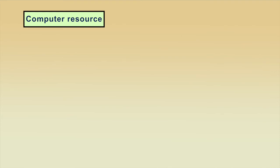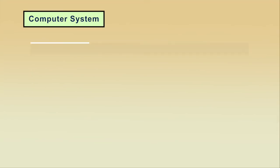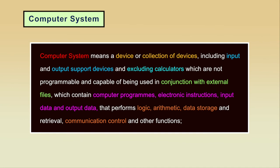Computer resource means computer, computer system, computer network, data, computer database, or software. Computer system means a device or collection of devices including input and output support devices, but not including calculators (which are not programmable), capable of being used in conjunction with external files containing computer programs, electronic instructions, input data, or output data that performs logic, arithmetic, data storage and retrieval, communication control, and other functions. Notably, calculators are not a computer system under the IT Act because they are not programmable.